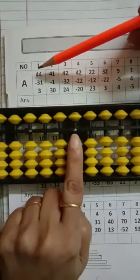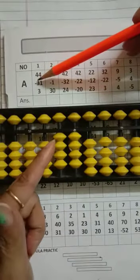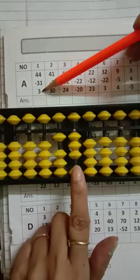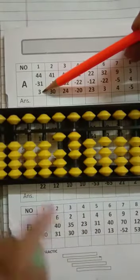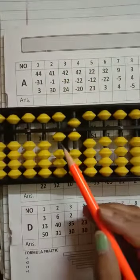This one is 1's place, this one is your 10's place. 44 minus 30, yes, minus 1. Then add 3, we don't have 3. Plus 3 formula: plus 5, minus 2. Your answer will be 16.